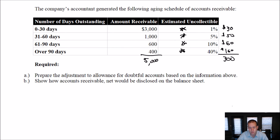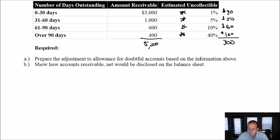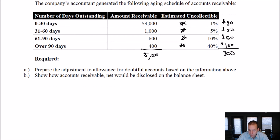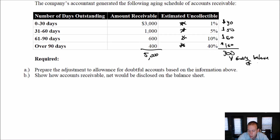Let's prepare the adjustment to allowance for doubtful accounts based on the above. When we take a percentage of our aging accounts receivable — unlike the percentage of sales method where the computed amount is the bad debt expense — this computed $300 is not the bad debt expense. This is the ending balance of our allowance for doubtful accounts.